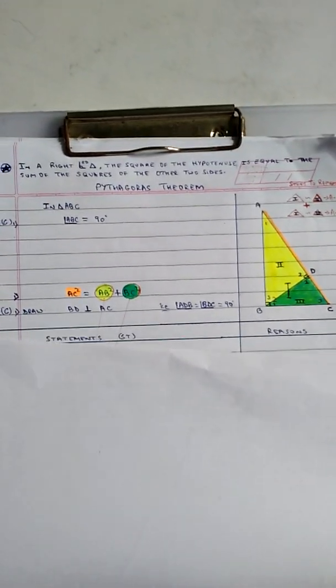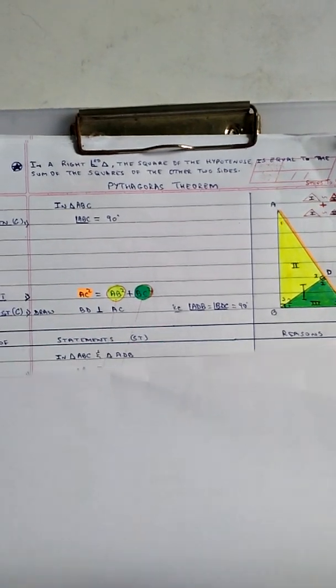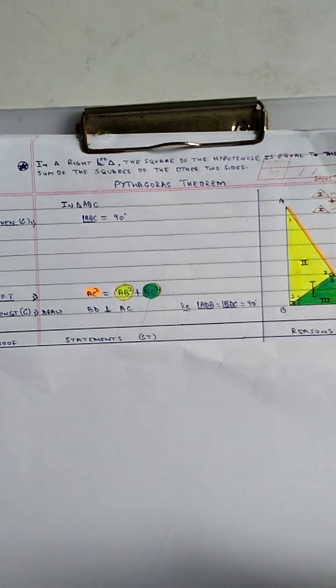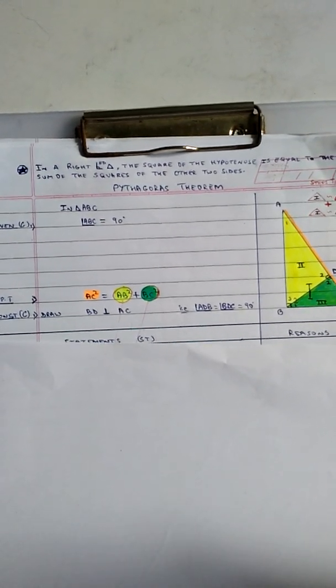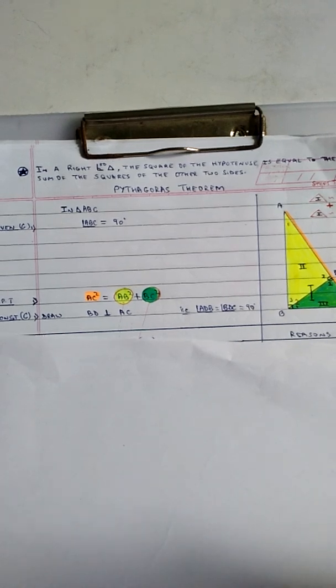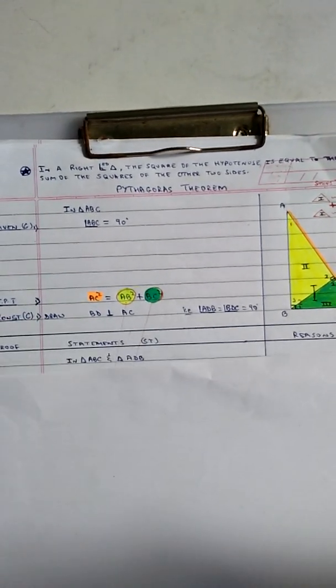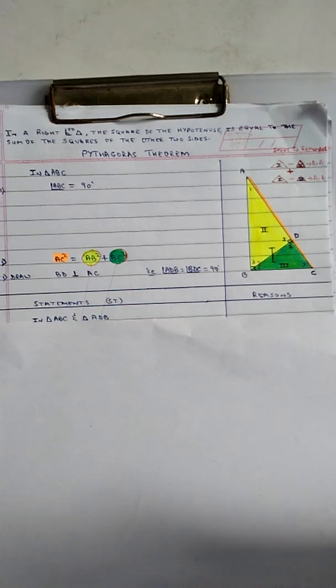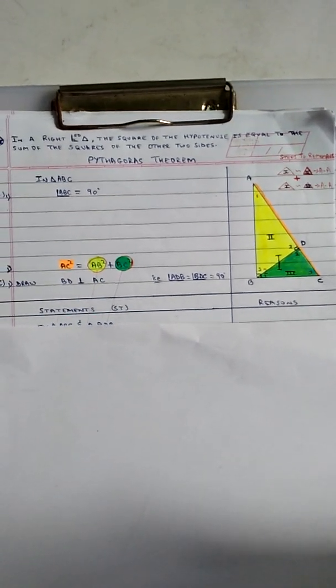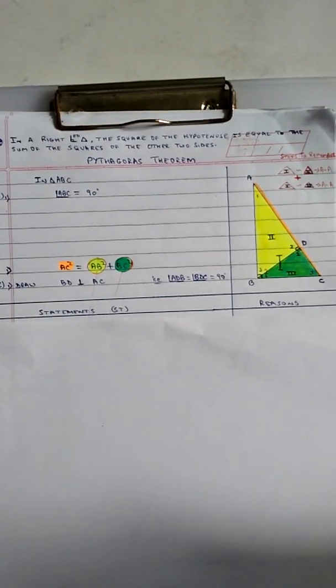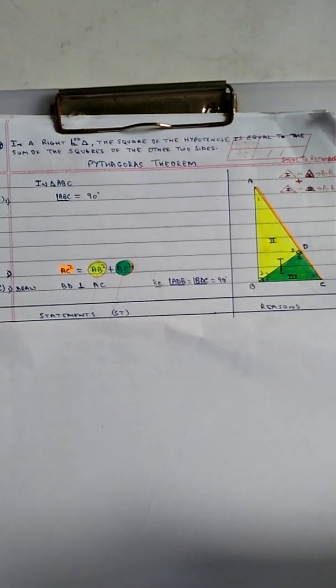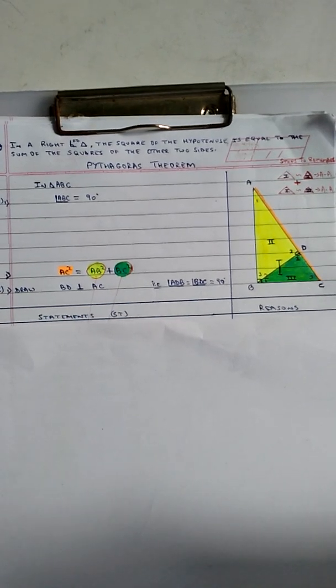Represent angle A as 1, angle B as 2, and angle C as 3. Construct BD perpendicular to AC. We now have three right-angled triangles: triangle 1 ABC, triangle 2 ADB, and triangle 3 BDC.